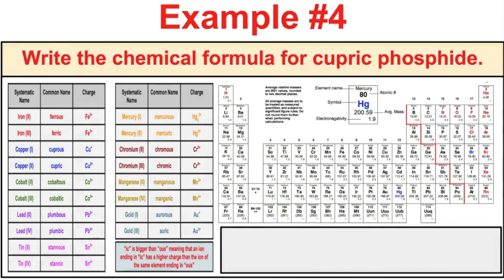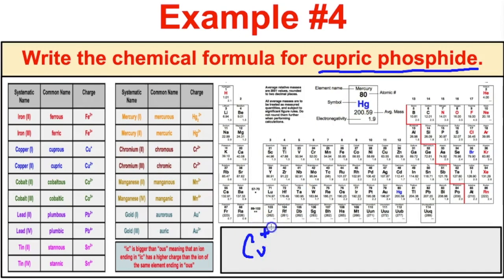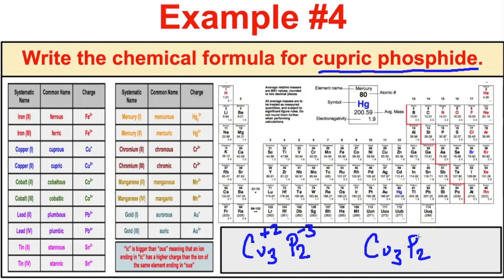For cupric phosphide: cupric refers to copper, and because it ends in -ic it's the copper ion with the higher charge, plus 2. Phosphide is P minus 3, coming from group 15. You need three copper ions and two phosphide ions so the charges cancel. Cu₃P₂ is the correct chemical formula for cupric phosphide.